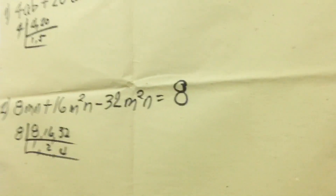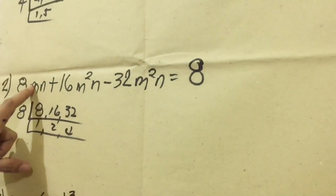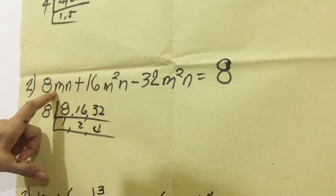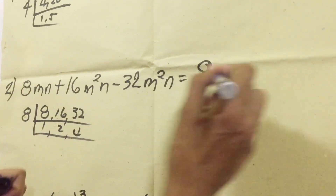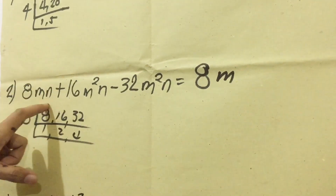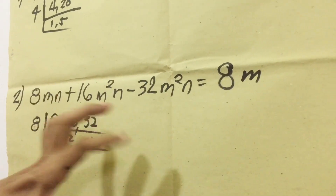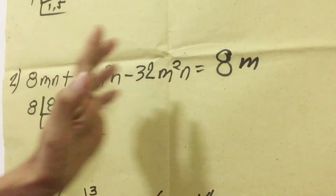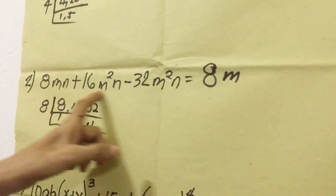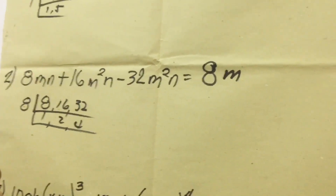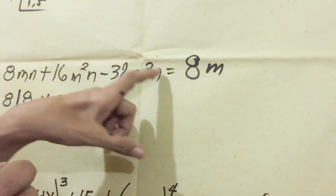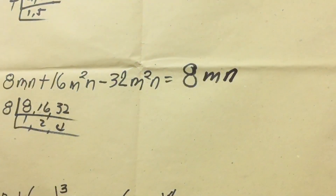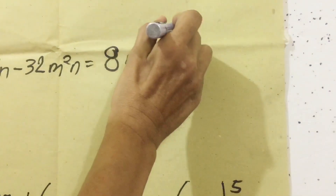Next, don't forget the variables. We have M, M squared, M squared — all terms have M, so we take the lowest exponent, which is M. Next, for N: we have N, N, N — all terms have N with no differing exponents, so we include N. All variables are present in every term, so we can include them.